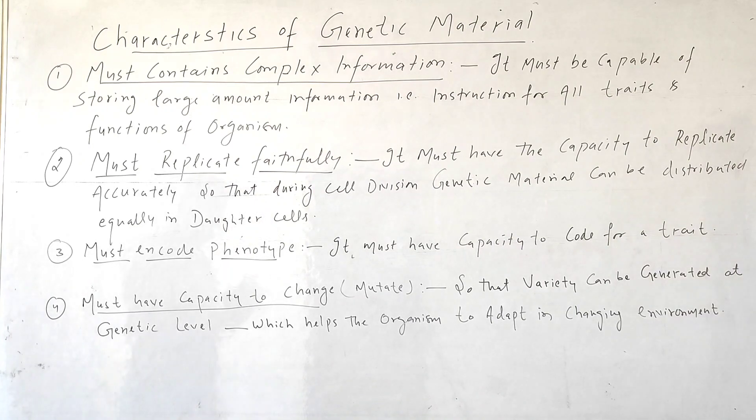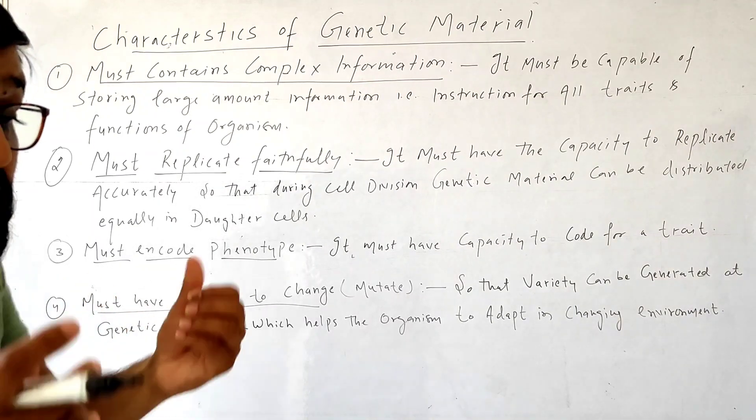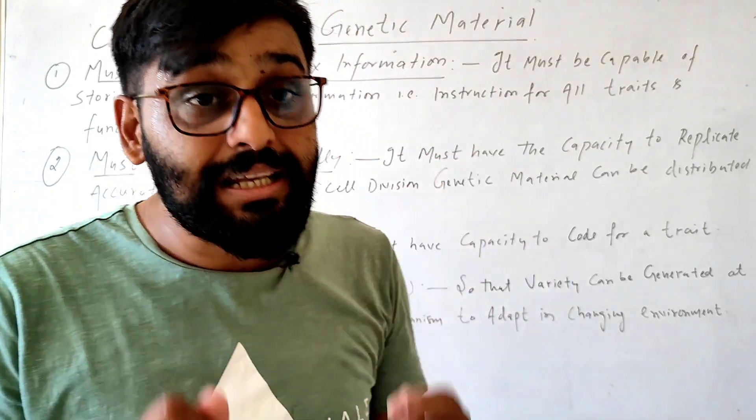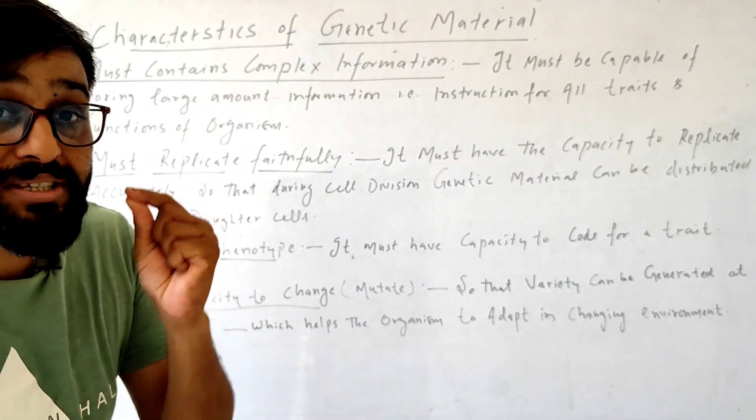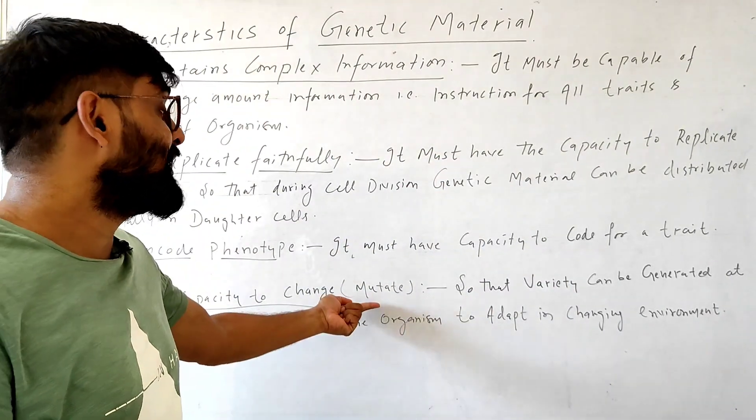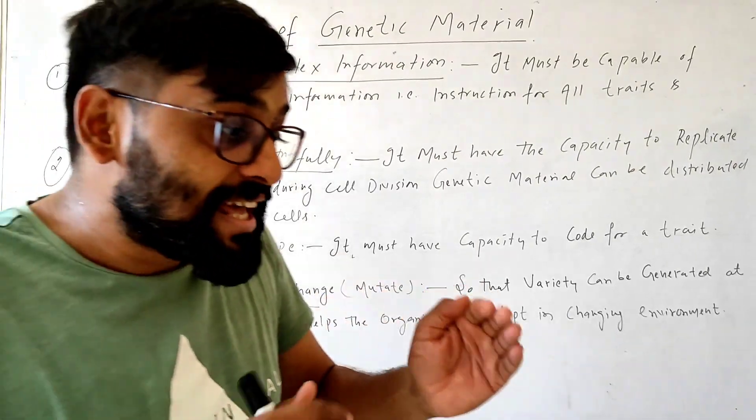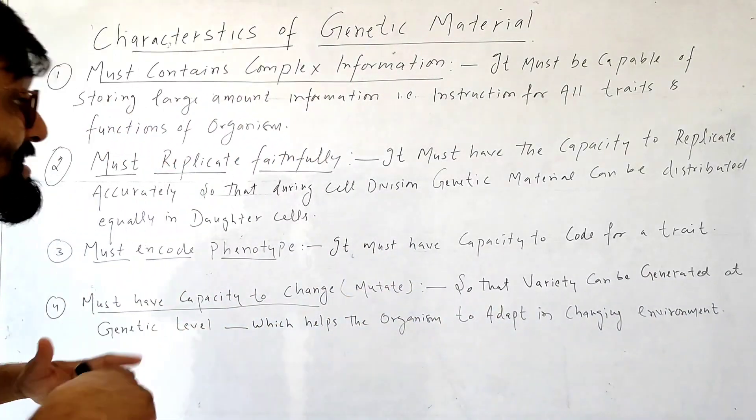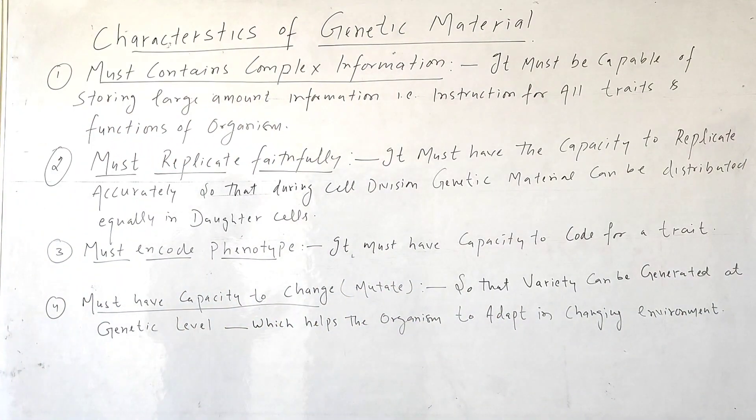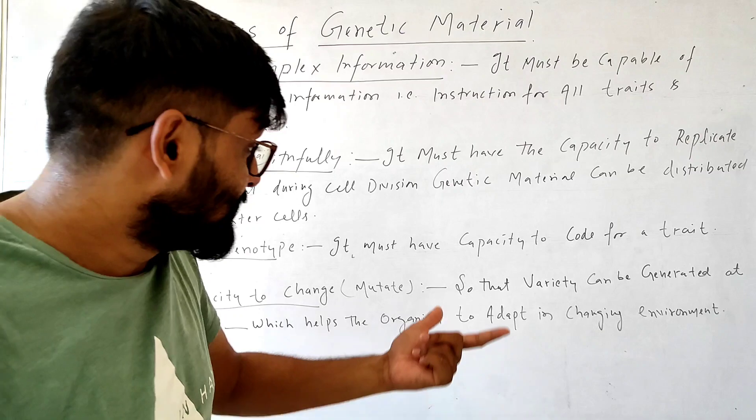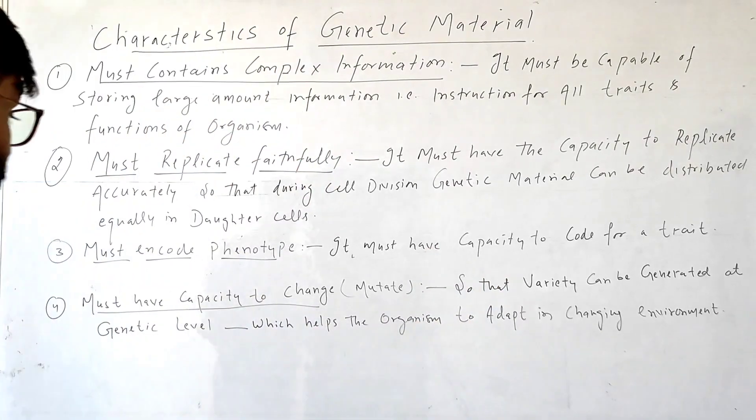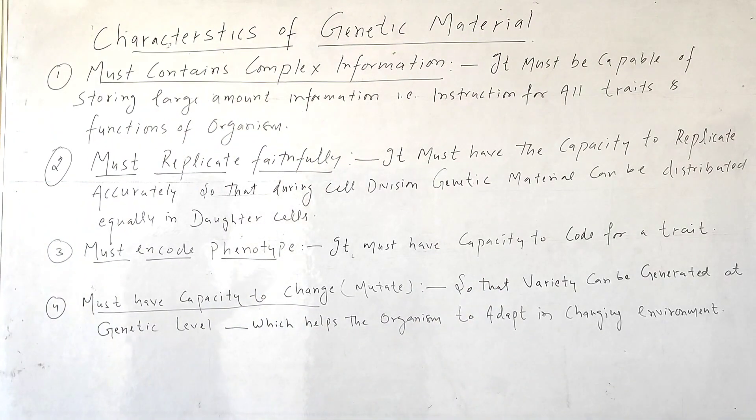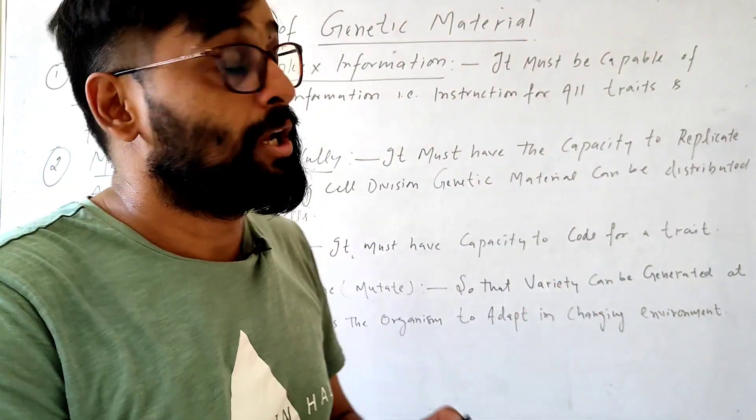And the fourth and last characteristic is must have capacity to change. Genetic material must have the capacity to change, to mutate. So that if genetic material changes with time, it generates variety at a genetic level. And this variety, this variation is beneficial for the organism to adapt in changing environments.